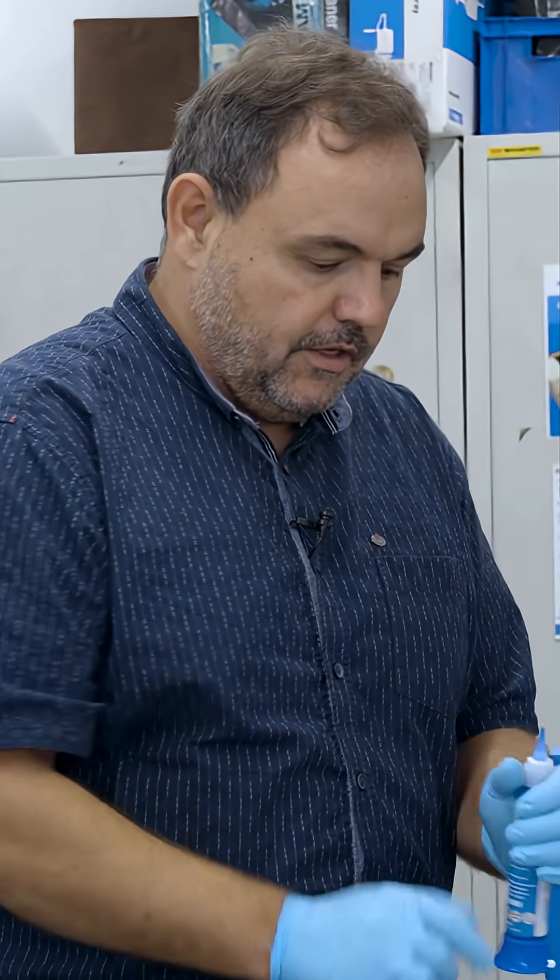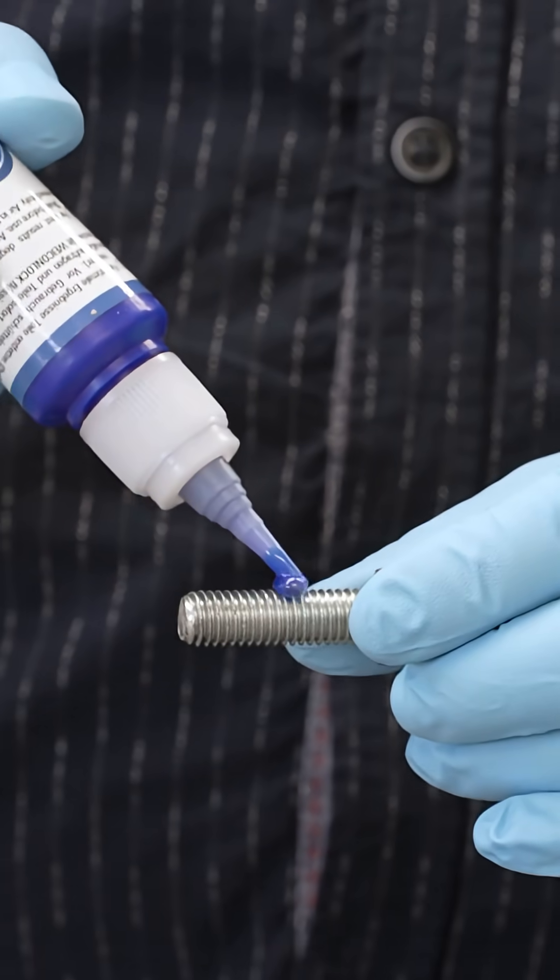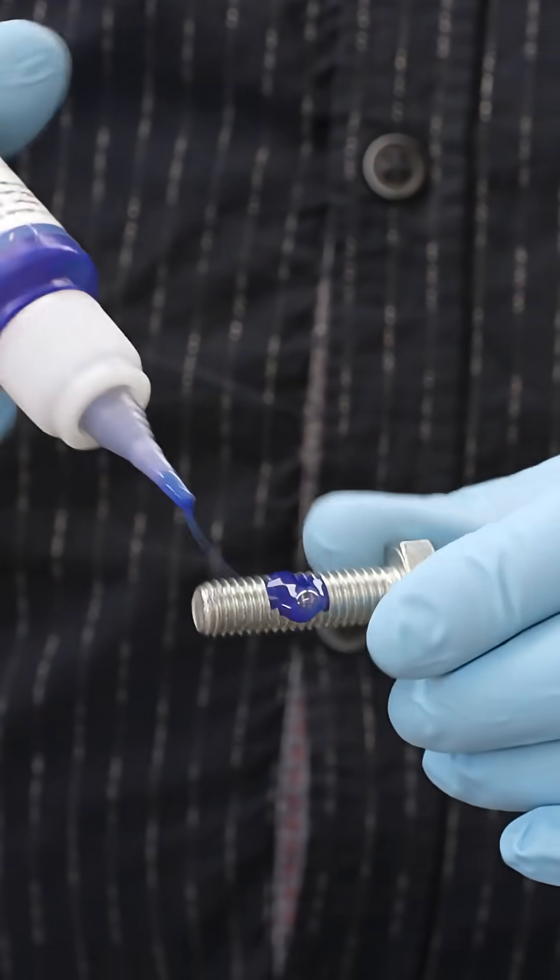In theory, you would take the screw, just as you'd expect, then carefully put the adhesive on the screw, making sure it is applied evenly and screw it in.